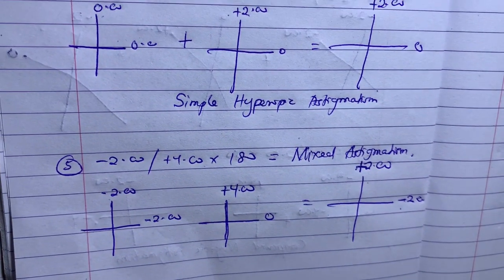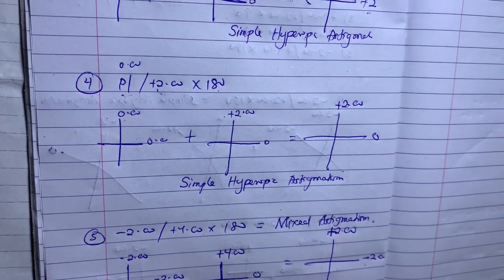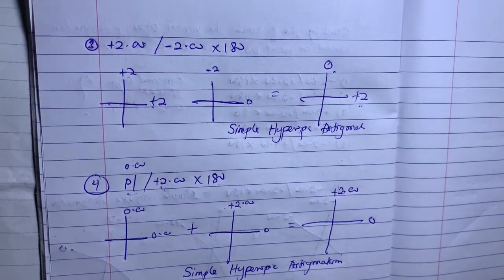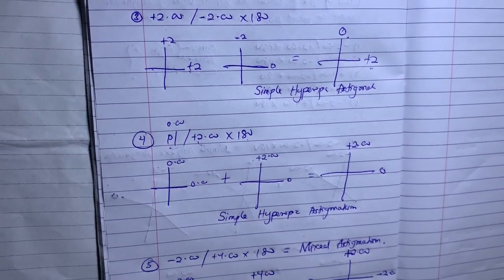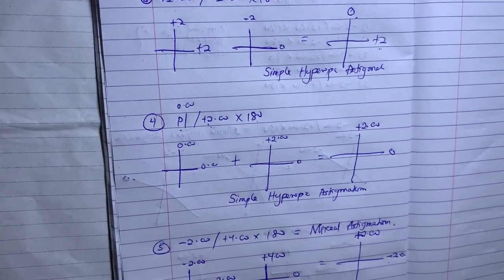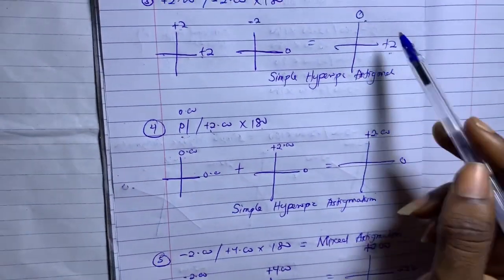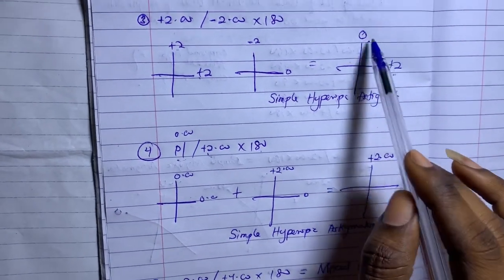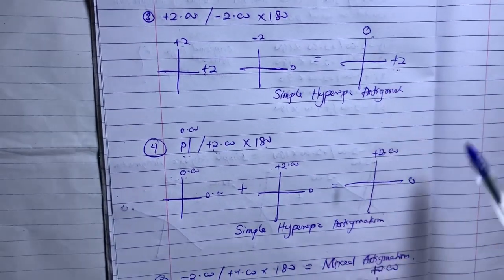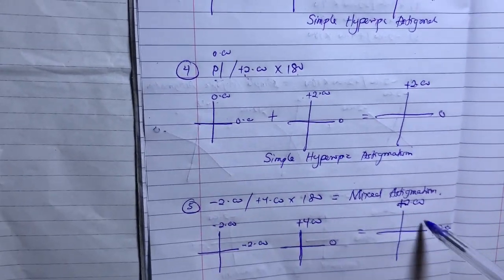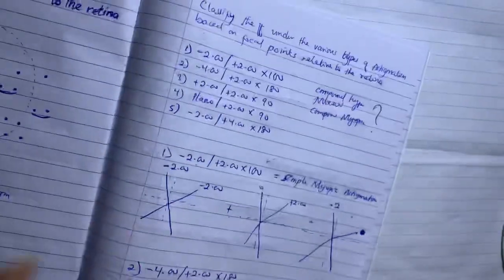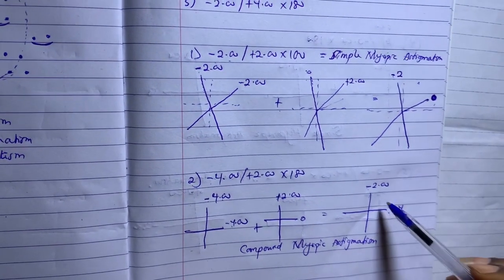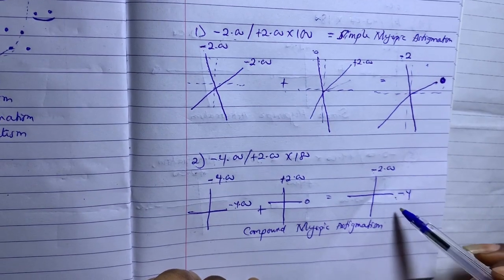So the key point: before you classify a prescription, always do your optical cross, combine the values, and read the final cross. If you get plus and plus, it's compound hyperopic. If you get zero and plus, it's simple hyperopic. If you get plus and minus, it's mixed astigmatism. If you get zero and minus, it's simple myopic. If you get minus and minus, it's compound myopic astigmatism.